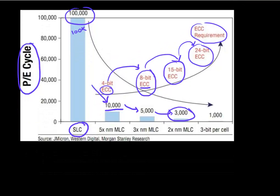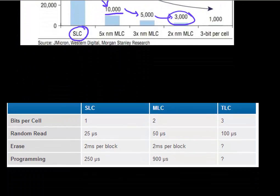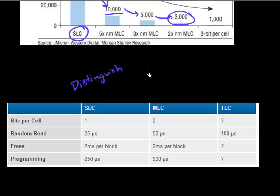There are other trade-offs as well. If you store multiple levels in one cell, you have to read and distinguish between multiple levels. Earlier with SLC you just had to distinguish between two levels; now you have to distinguish between four or eight levels. So if you're doing a random read, your controller takes more time to figure out which state your cell is in, and your read time increases as well.